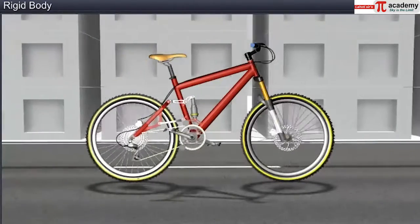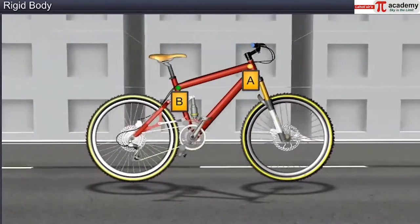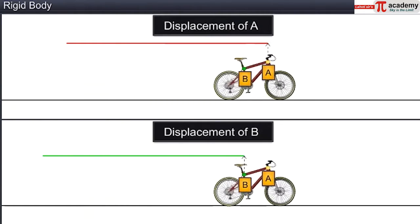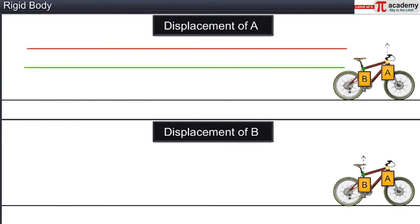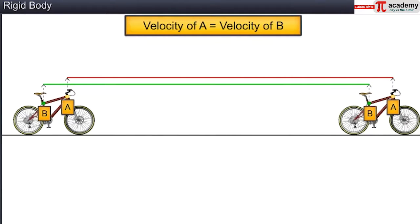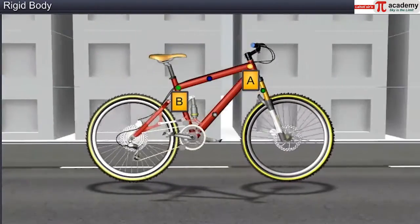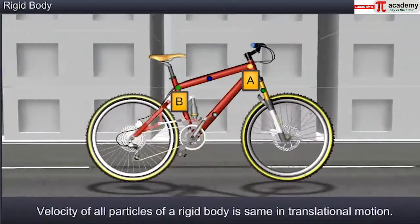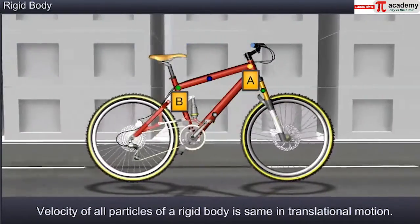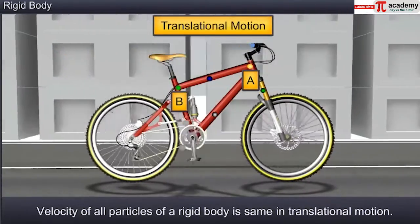Let us now observe a bicycle in motion. If A and B are two particles on the frame, as the bicycle moves, the displacement is the same for both A and B. This implies that the velocity of particle A is equal to the velocity of particle B, and this is true for all other particles of the rigid body. Such a motion, in which the velocity of all the constituent particles is the same at any instant of time, is known as translational motion.